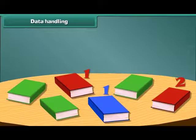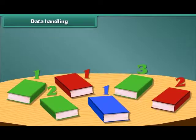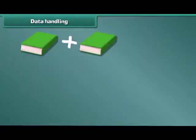How many green colored books do you see? 1, 2, 3. There are 3 green colored books.